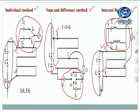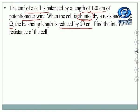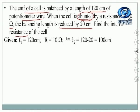Let us try one numerical. The EMF of a cell is balanced by a length of 120 centimeter of a potentiometer wire. When the cell is shunted — that is, a resistance connected in parallel — by a resistance of 10 ohm, the balancing length is reduced by 20 centimeter. Find the internal resistance of the cell. So L1 is given as 120 cm and capital R is 10 ohm.